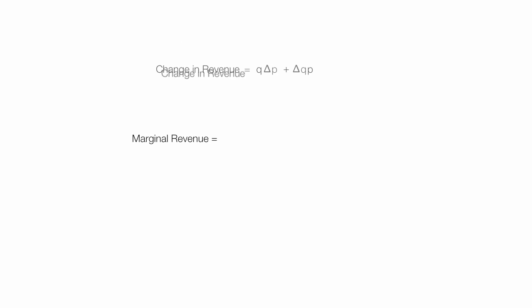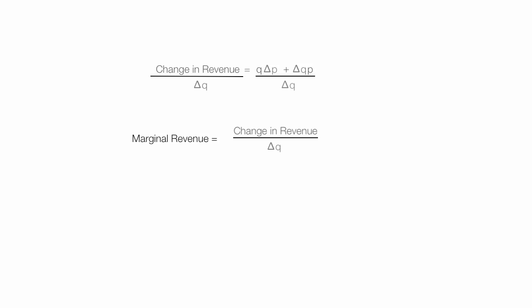By definition, marginal revenue is the change in revenue due to a change in quantity. I can write it as that change over ΔQ. So I divide both sides of the equation by the change in quantity, and this equals marginal revenue.